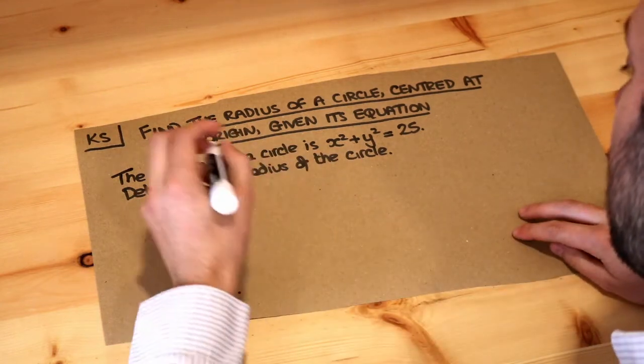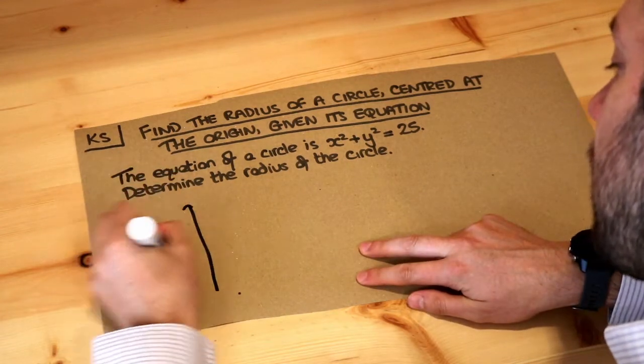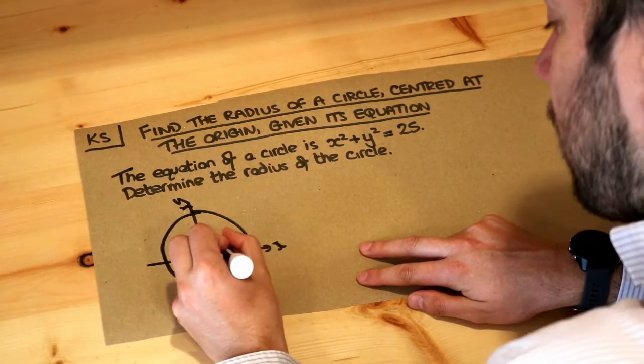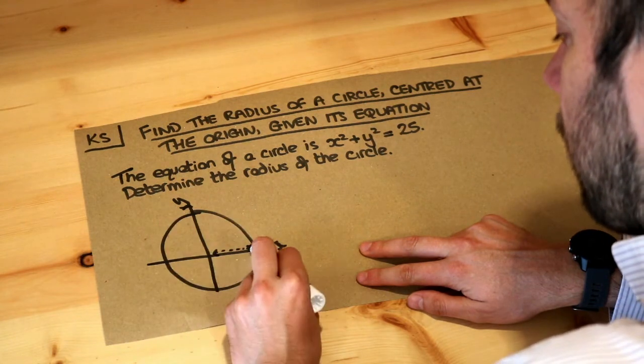In the previous videos on this we saw that the equation of a circle where the circle was centered at the origin and had radius r. Remember the radius of a circle is the distance between the center of the circle and the circumference.